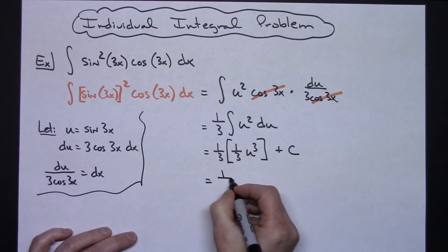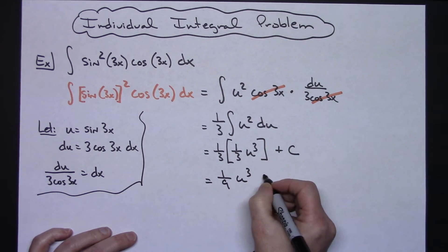Simplifying here a little bit: one-third times one-third is going to give me a one-ninth u to the third plus C.